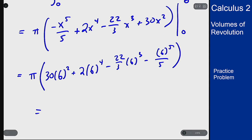Which if you work that out, this term is 1080, this term is 2592, this is 1584, and this is 7776 over 5.